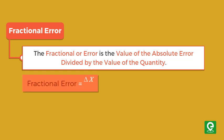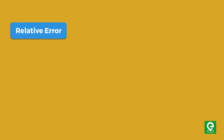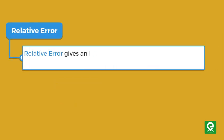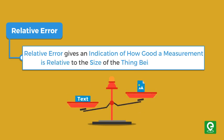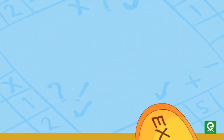The fractional error multiplied by 100 gives percentage error. Relative error gives an indication of how good a measurement is relative to the size of the thing being measured.